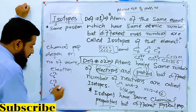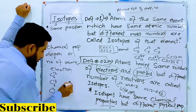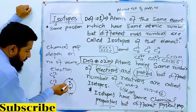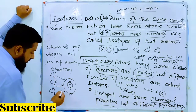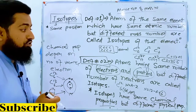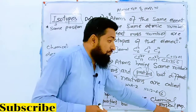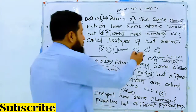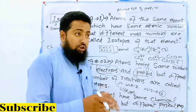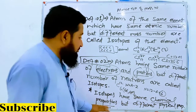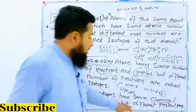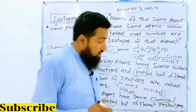Carbon has 6 electrons, 6 protons, and 6 neutrons in carbon-12; 7 neutrons in carbon-13; and 8 neutrons in carbon-14. All carbon isotopes have the same chemical properties. Physical properties depend on the number of neutrons, and the number of neutrons is different — 6, 7, or 8 — which is why physical properties differ between isotopes.